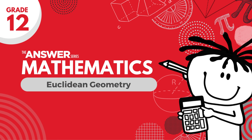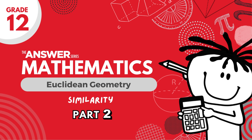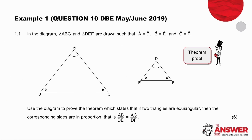Hello and welcome to a video on geometry brought to you by the Answer Series. In this video we will continue looking at similarity. Question 1.1 asks you to prove the theorem that if two triangles are equiangular then their corresponding sides are in proportion. When you see a theorem in geometry, you know that in the question that follows you will need to use that particular theorem. The fact that they've asked you a similarity theorem here means you will need to use similarity in the next problem, even if they don't specifically ask you to do it.